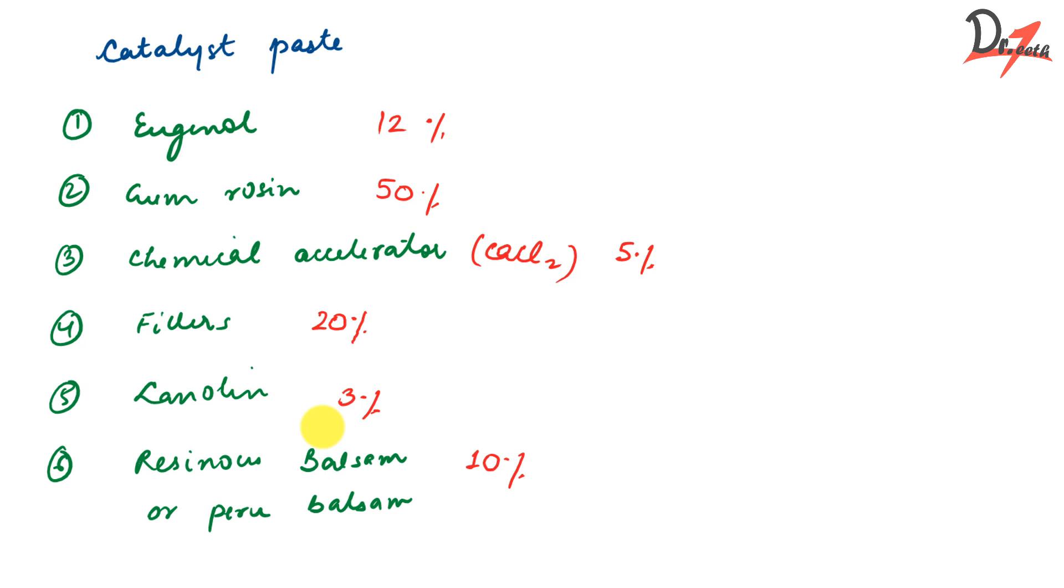Coming to the catalyst paste, it has eugenol, which gives that peculiar smell, right? So it is 12%. The maximum quantity is gum rosin 50%. We have chemical accelerators, which is 5%. Then fillers 20%, lanolin 3%, resinous balsam or peru balsam 10%. Now let us see the function of each of these in brief.